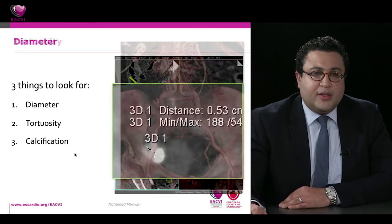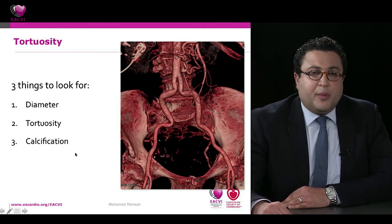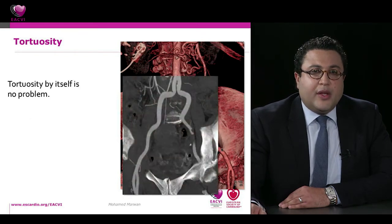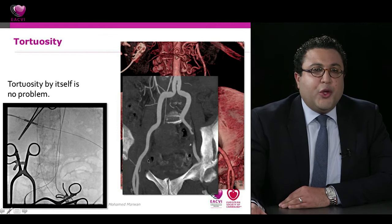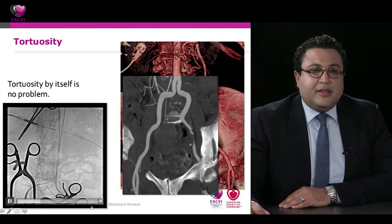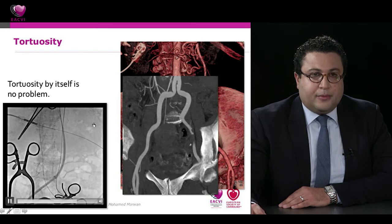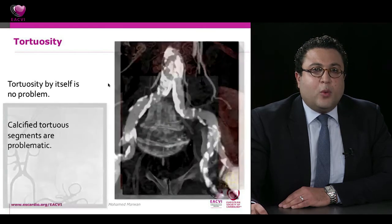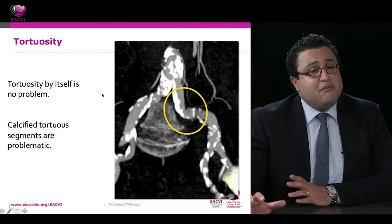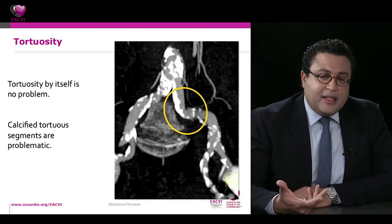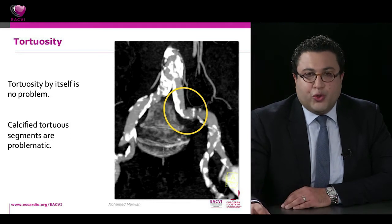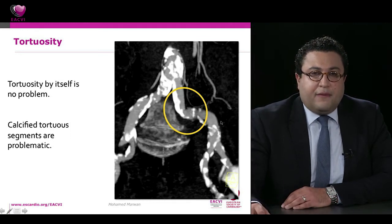Tortuosity is not uncommon in this elderly population. In this image of an elderly lady, we see multiple 90-degree bends. Non-calcified tortuosity is not a problem — interventional cardiologists using stiff wires and sheaths can stretch these out. What is problematic are calcified tortuous segments. In thin-slice images, a calcified bend is visible on one side, which may cause difficulties advancing the device.